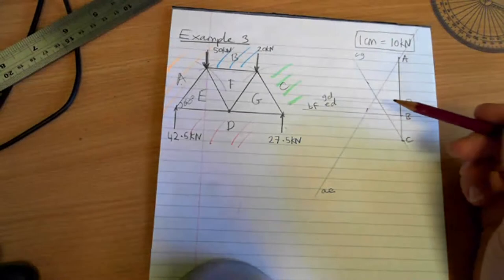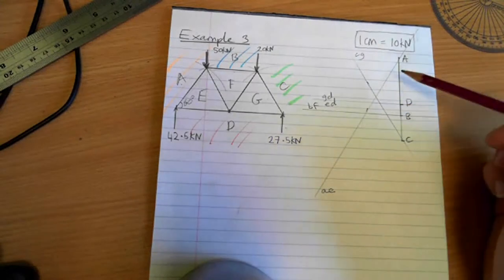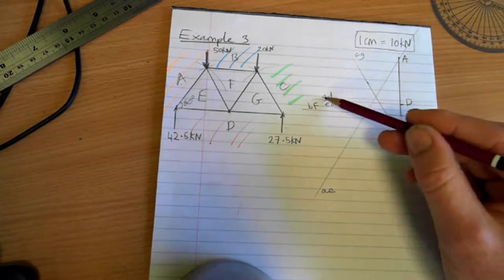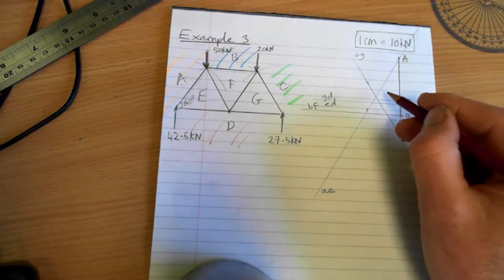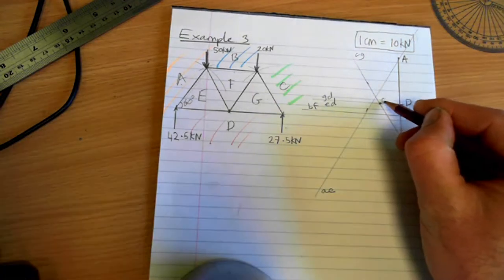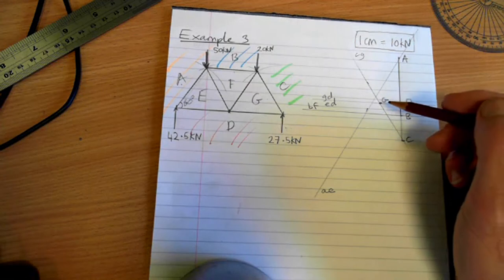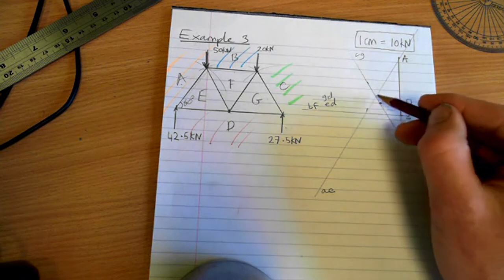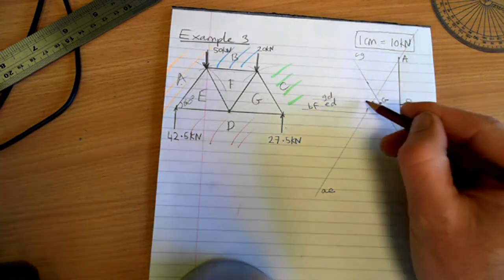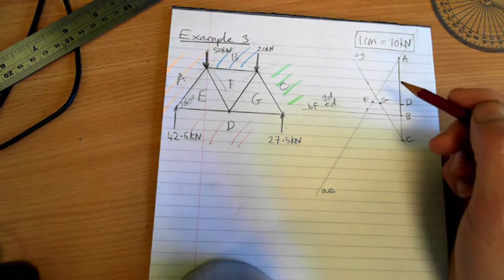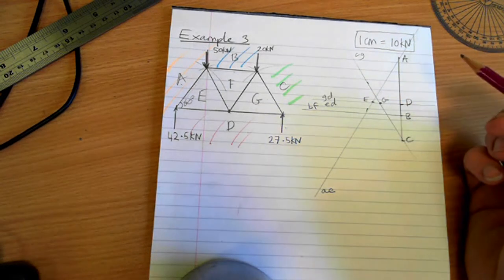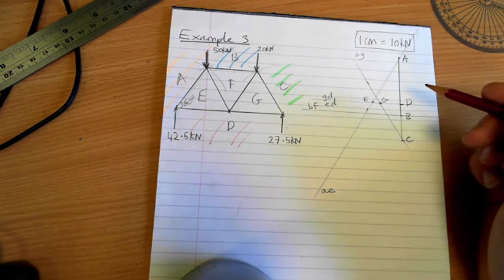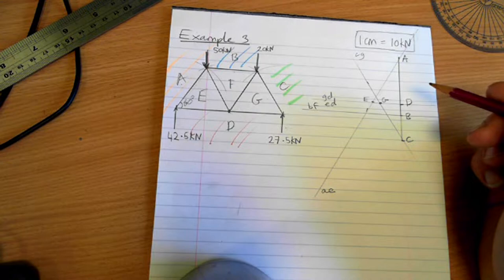So what we're going to do now is try and work out some points. So can you spot any? So we've got CG down here, GD across here. So you can see the intersect here. So that's got to be point G. We've got A here, AE going up here. And ED here. So this point will be point E.